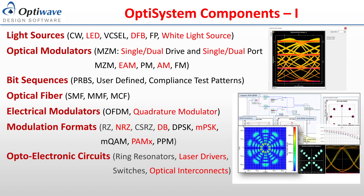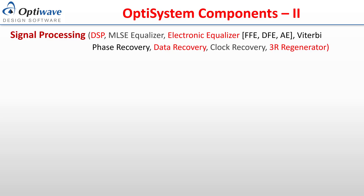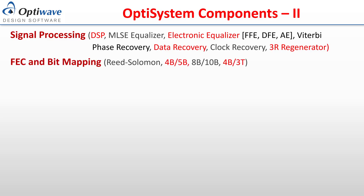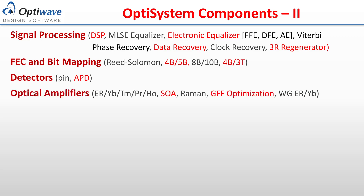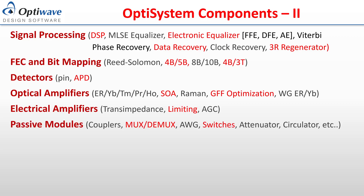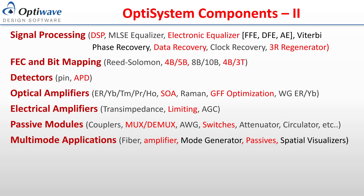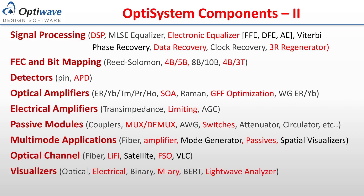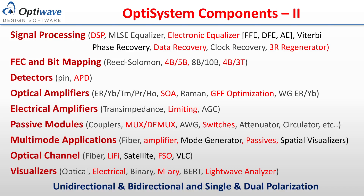Additional components include signal processing such as DSPs, various equalizers, and regenerators, forward error correction and bitmapping including Reed-Solomon and 4-bit to 3-bit ternary, detectors using PIN and APD, optical amplifiers such as various EDFA fibers and SOAs, electrical amplifiers including transimpedance and AGC, passive modules such as couplers, switches, and attenuators, multimode applications with fibers, amplifiers, and passives, optical channels within fiber and free space, and visualizers for all different signal types. OptiSystem components are both unidirectional and bidirectional, and both single and dual polarization systems can be implemented.